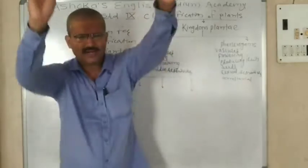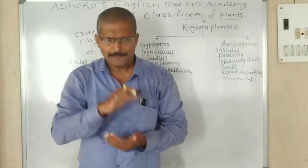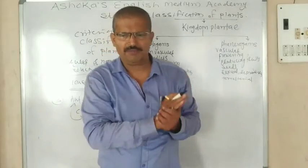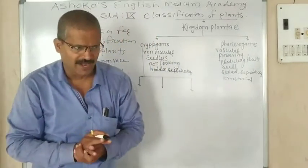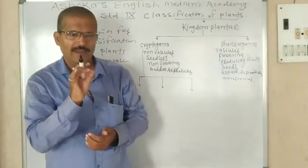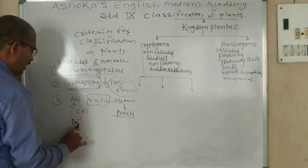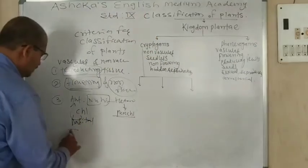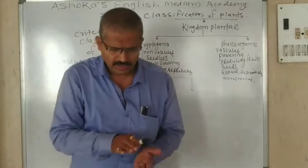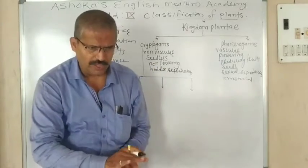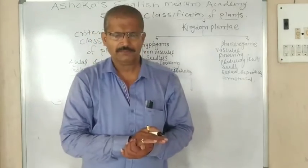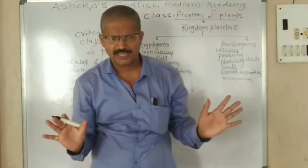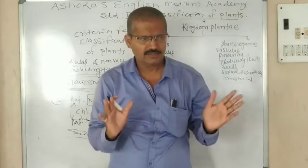Besides that, plants are classified according to their size and habitat. Some plants are amphibious, some are totally terrestrial, and some are aerial plants — so habitat is also a criterion. According to size, plants are classified as herb, shrubs, and tree. Some plants are creeping plants, some grow up to 1 meter, and some grow more than 100 meters in height.